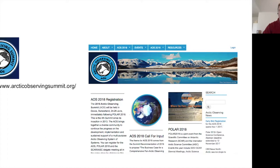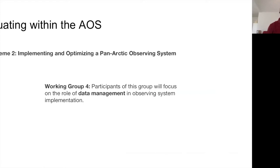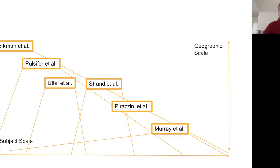The AOS is broken into themes. There's a general theme of utilizing the observing system, with a sub-theme of implementing and optimizing a pan-Arctic observing system. Within that, Working Group 4 is focused on data management, which Oistein Godoy and I are co-chairing. As co-chairs, we've received a number of different statements — 1,500 words and less — about various topics, and we'll be going through each of those statements to give you a sense of what they are.